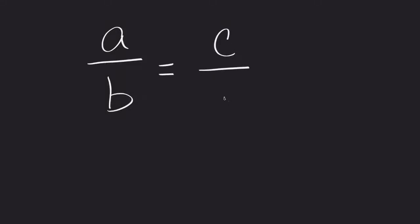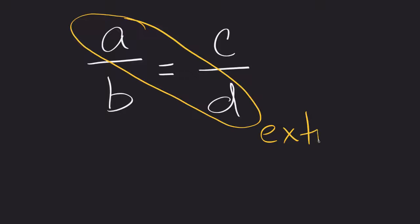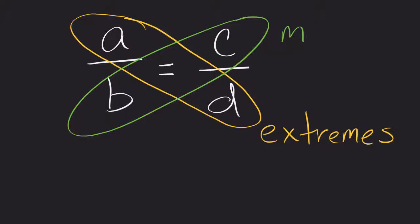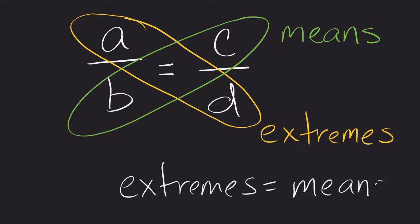So if I have something like this, a over b is equal to c over d. If I was to multiply these two together, and these are called the extremes, and I was multiplying these two together, which we call the means, what we could basically say is that the extremes will be equal to the means, or the product of the extremes is equal to the product of the means.